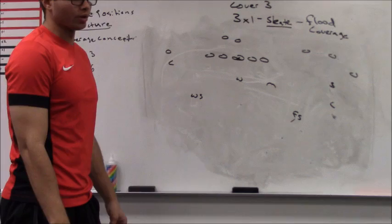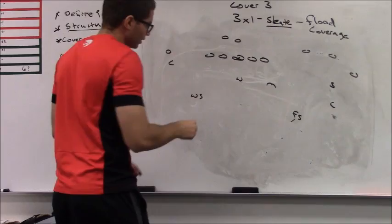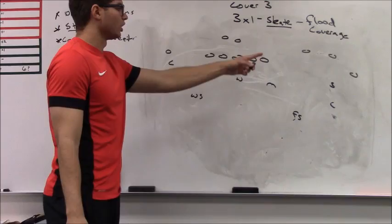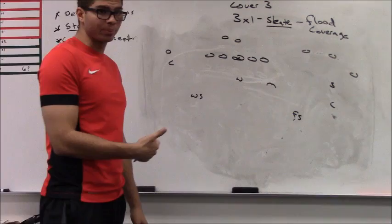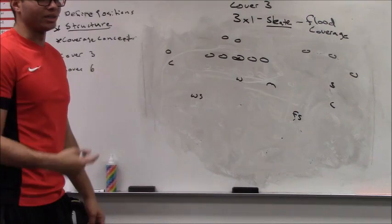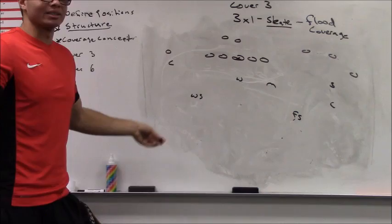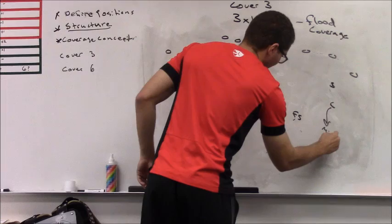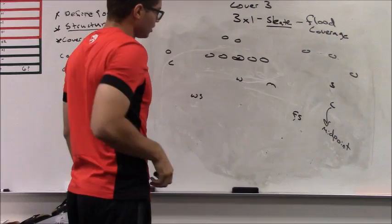You are basically playing skate. All right, so we're going to go through skate. So the corner's alignment in skate, he needs to end up 7x divider leverage on the number 1. 7 yards off divider leverage. You can start him in press and have him bail to that leverage. You can start him at 7x1. But he needs to be 7x1 divider leverage inside or outside by the snap or right before the snap of the football. He's going to use his midpoint technique. He's going to use midpoint. Again, we're playing flood coverage.